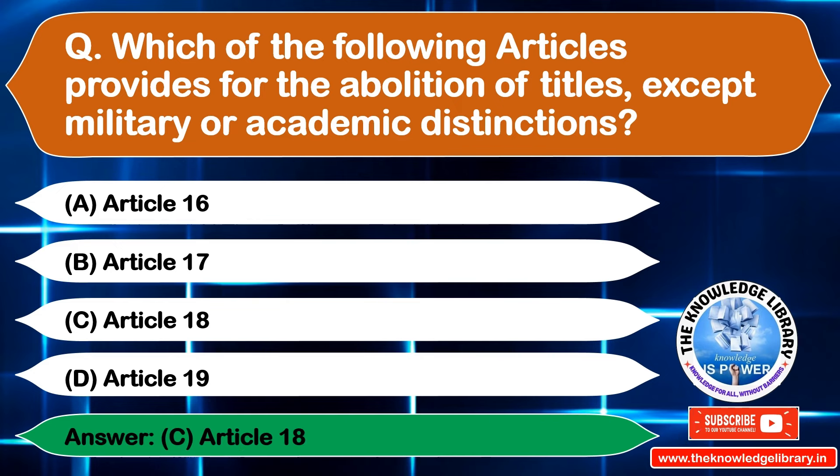The next question is: the term habeas corpus literally means — Option A: To command, Option B: To have the body, Option C: To prohibit, Option D: To rectify. The correct answer is Option B: To have the body.